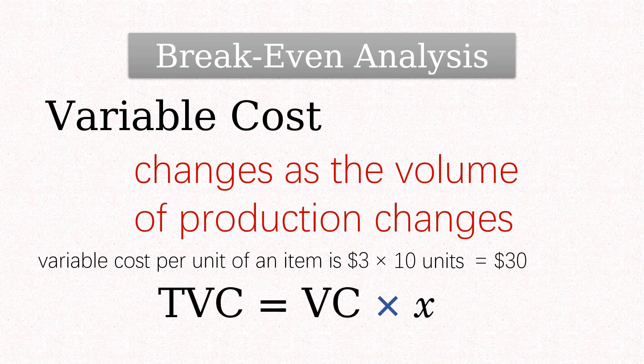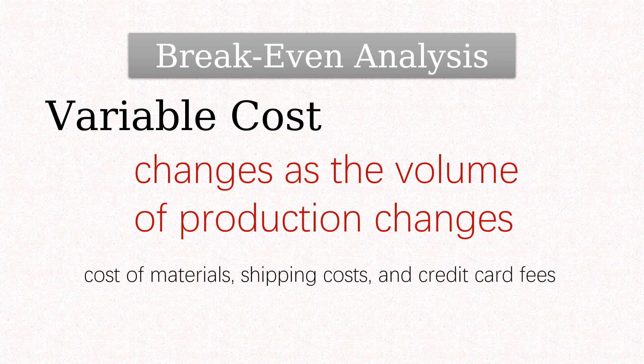That is, total variable cost equals variable cost per unit times the number of units produced, which we denote as x. Examples of variable costs are cost of materials, shipping costs, and credit card fees.